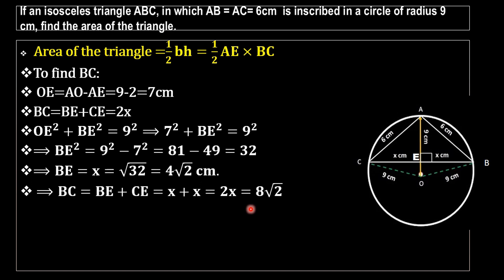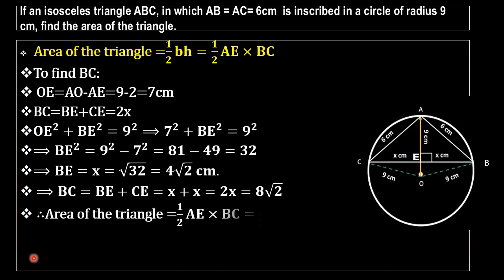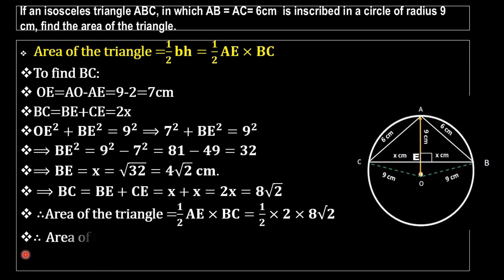Next, we find the area of the triangle. Area equals half into AE into BC, which is half into 2 into 8 root 2. On cancelling 2 and one-half, we get 8 root 2 centimeter squared as our area of the triangle.